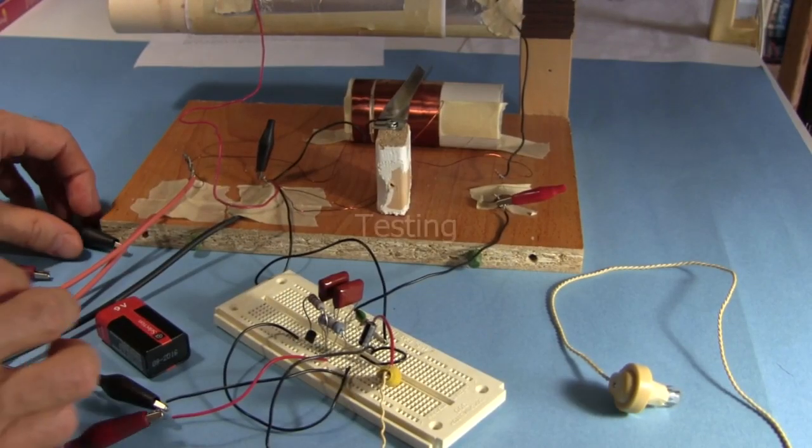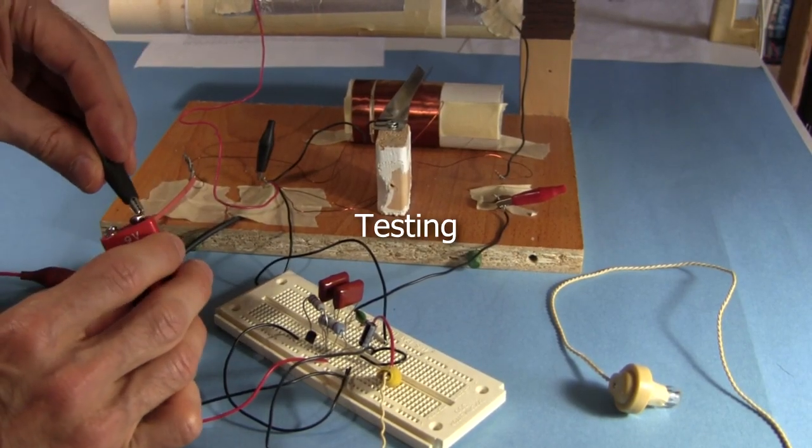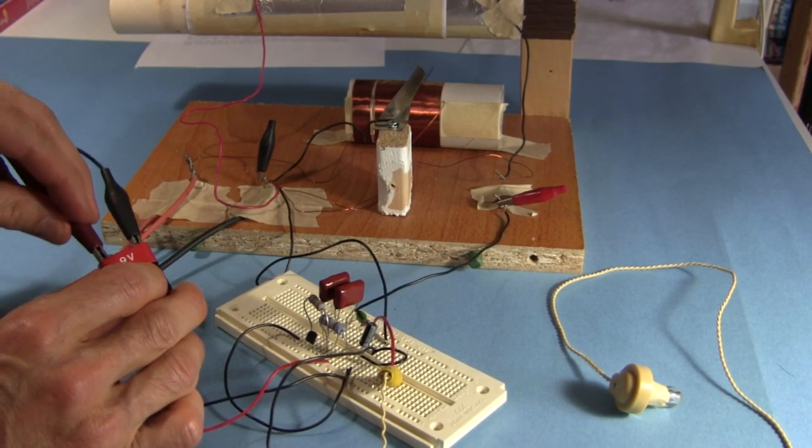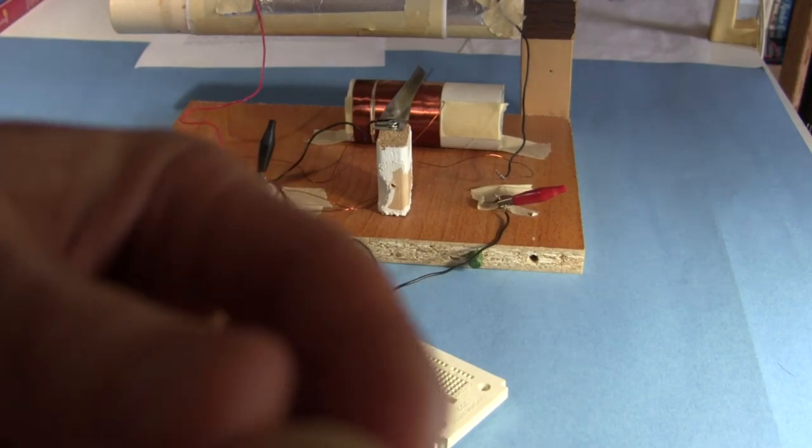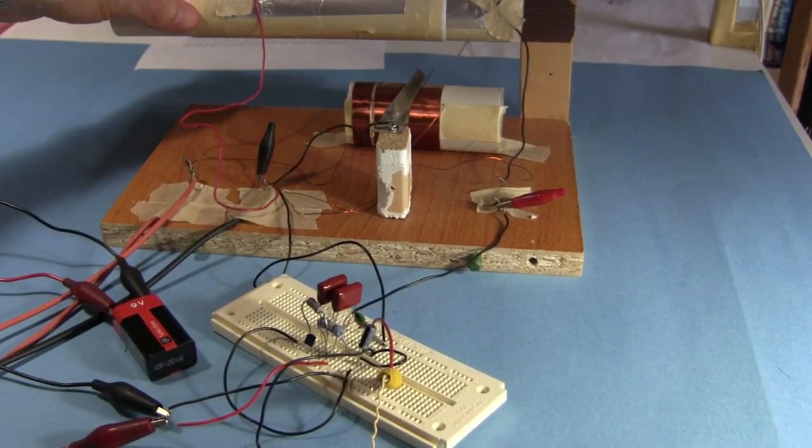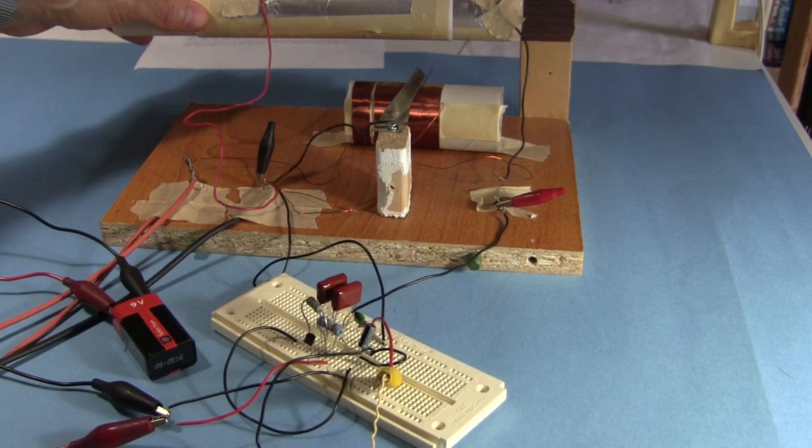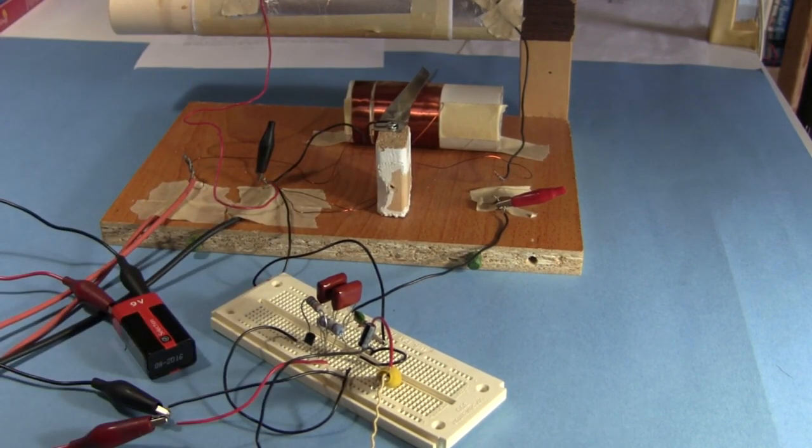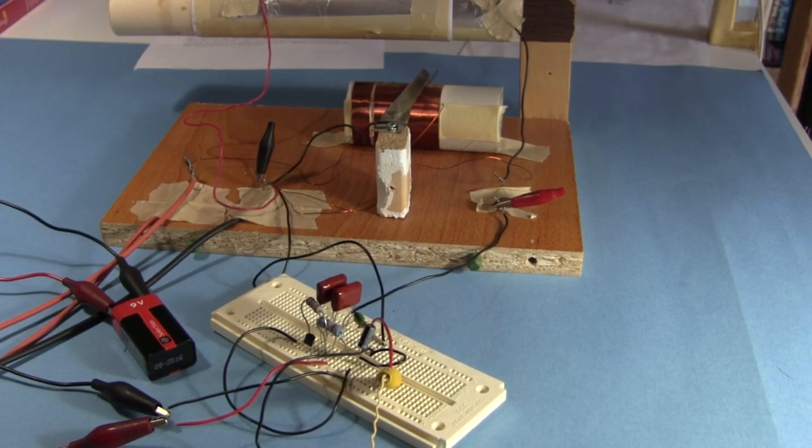Okay, so now to try it out. I'll connect the black alligator clip to the negative of the battery. Red to the positive. I'll just put the ear piece in this camera microphone. Ah, nice and clear. Works great.